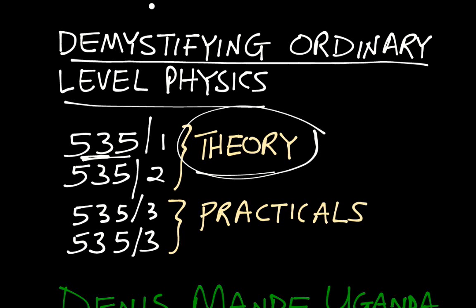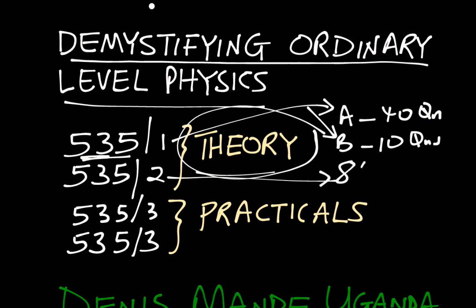Paper one has 50 questions total. Actually there are two sections for paper one. Section A has 40 questions, and these are multiple choice questions. And in section B, this is for paper one, section B has ten structured questions.